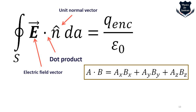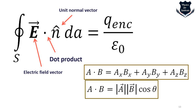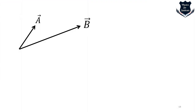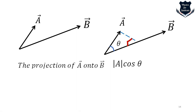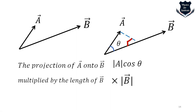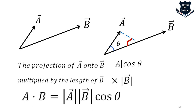Consider vectors a and b with an angle theta between them. The projection of a onto b, multiplied by the length of b, gives a·b = |a||b|cos(theta). So the dot product represents the projection of a onto the direction of b, multiplied by the length of b. This is why Gauss's law uses the dot product.